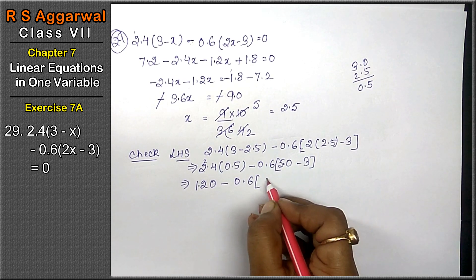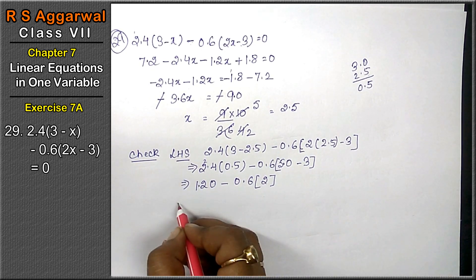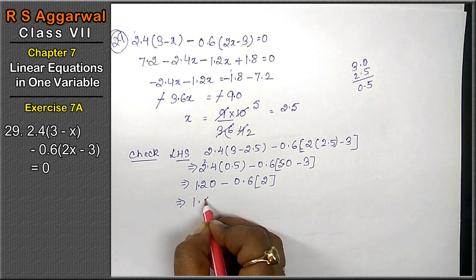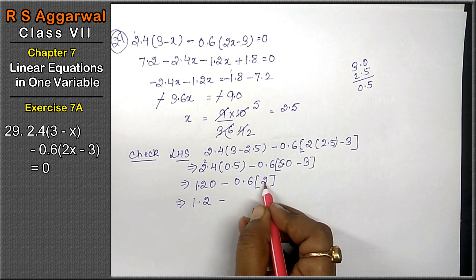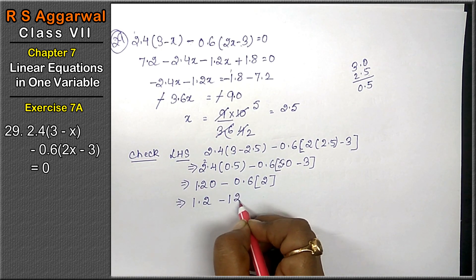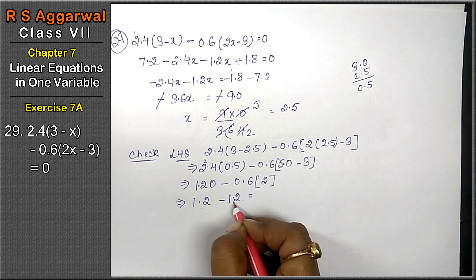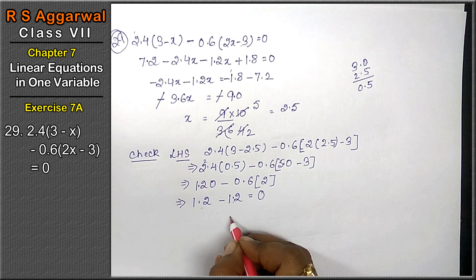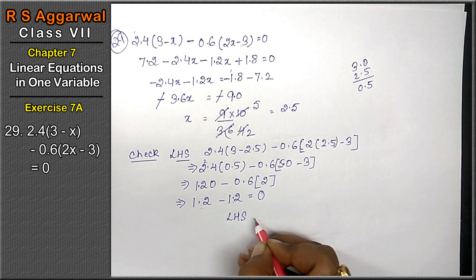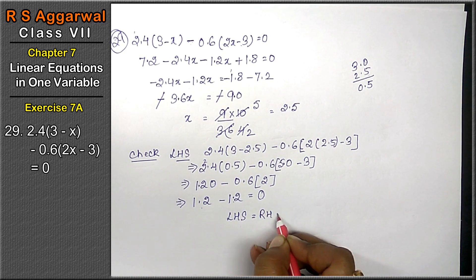5 minus 3 is 2. Now 1.2 minus 2 times 6 is 12, 1 point, point here. This is plus, this is minus, so the answer is 0. That means left hand side equals right hand side.